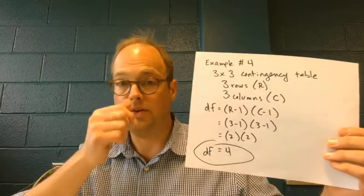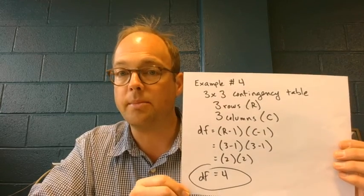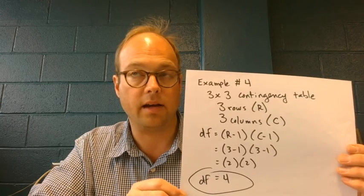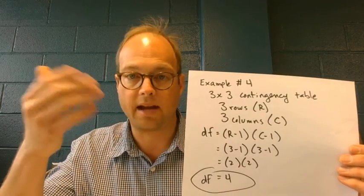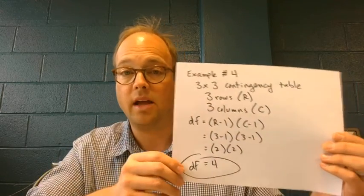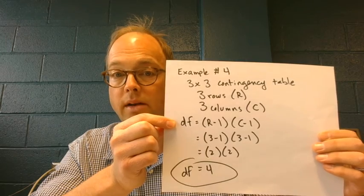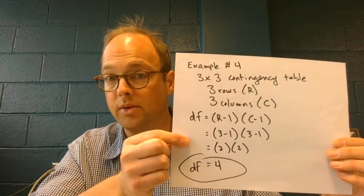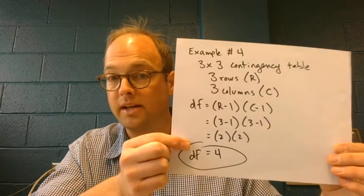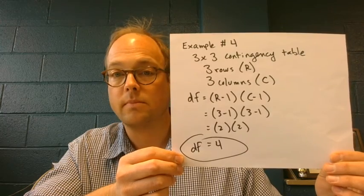Last but not least, example number four involved three categories of computer users — Mac, PC, none — as well as three disciplines: social sciences, earth sciences, humanities. That's a three by three contingency table — three rows, three columns. Degrees of freedom: R minus one times C minus one. Three minus one times three minus one: two times two is four. So for a three by three contingency table, the degrees of freedom would be four.